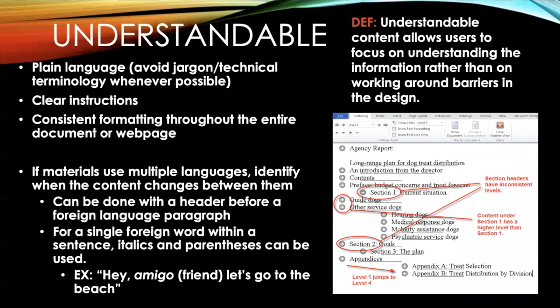Number three: understandable content allows users to focus more of their effort on understanding the information rather than working around barriers in the design. Providing clear instructions written in plain language and consistent formatting will assist users in comprehending the material. For example, if bullet points are used in one area, learners' comprehension is improved if they are used throughout the entire document. If materials include more than one language, including programming languages, the authors should identify when they are switching between them, to ensure assistive technology learners will better comprehend the information.